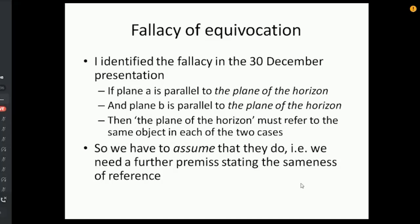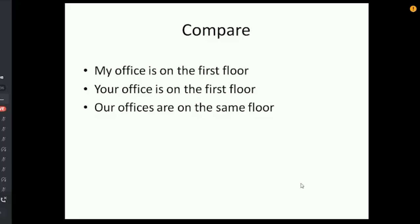Now, Bev claimed to me in conversation that, I think he conceded there was a fallacy in the straw man argument I presented last week, but you see precisely the same fallacy in that meme. It's the fallacy of equivocation. If plane A is parallel to the plane of the horizon and plane B is parallel to the plane of the horizon, then the term, the plane of the horizon must refer to the same object in each of the two cases. So we have to assume that they mean the same, and we need a further premise stating the same as a reference.